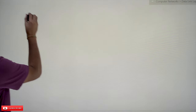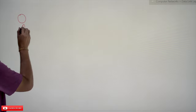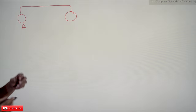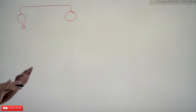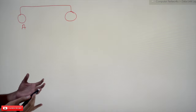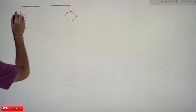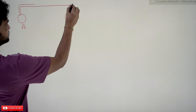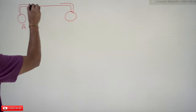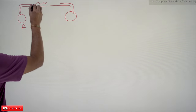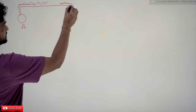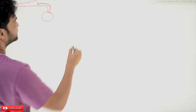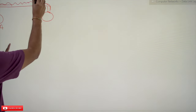Here we have System A and System B, both transmitting data. We already have an idea of what a collision is. Whenever A is transmitting data and B is also transmitting data at the same time, both signals will collide at some point — based upon when they transmitted the data, they will collide at some point in the medium.